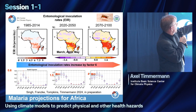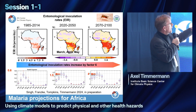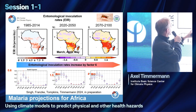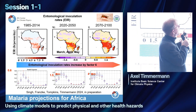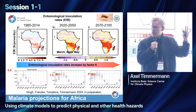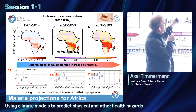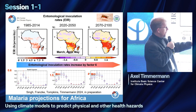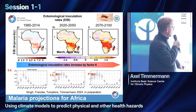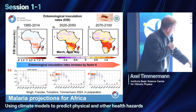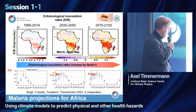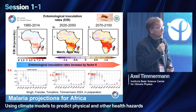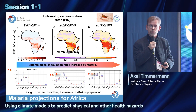Here are the results. This shows the entomological inoculation rate for present-day conditions, focusing on Africa. You can see mostly Sub-Saharan and Southern Africa with very high rates. As we go into the future, putting temperature and precipitation data into this vector model, the EIR changes substantially. Going from present-day conditions to 2090–2100, there is an intensification by a factor of six — from a maximum value of about 0.6 to 4 in Southern Africa.